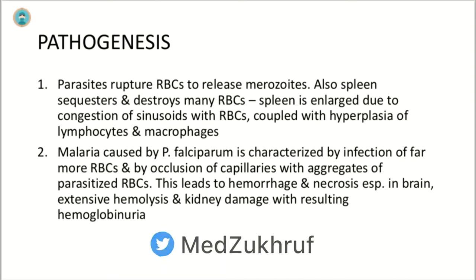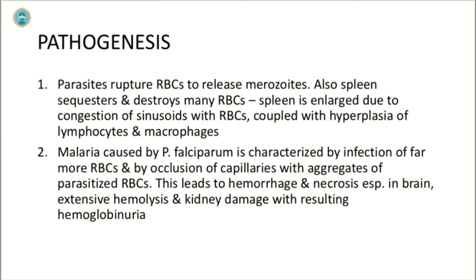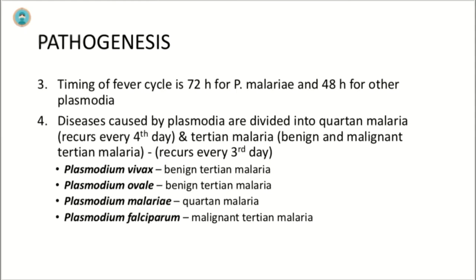Malaria caused by P. falciparum is more severe than that caused by other plasmodia. It is characterized by infection of far more red blood cells and by occlusion of capillaries with aggregates of parasite-laden red blood cells, leading to life-threatening hemorrhage and necrosis, particularly in the brain — called cerebral malaria. Extensive hemolysis and kidney damage also occur, resulting in hemoglobinuria. The dark color of the patient's urine has given rise to the term 'blackwater fever.' Hemoglobinuria can lead to acute renal failure.